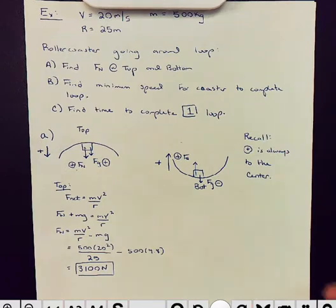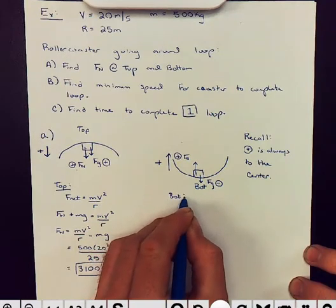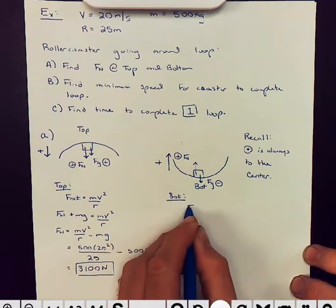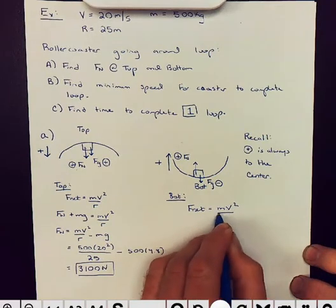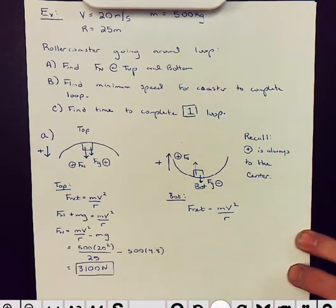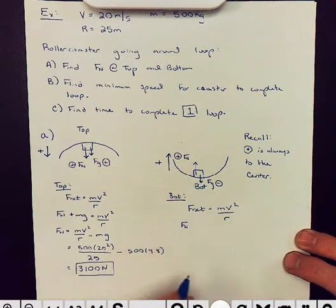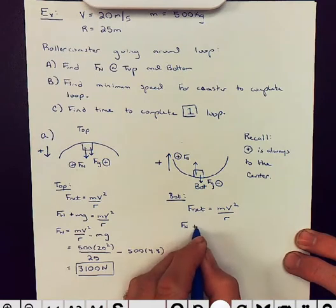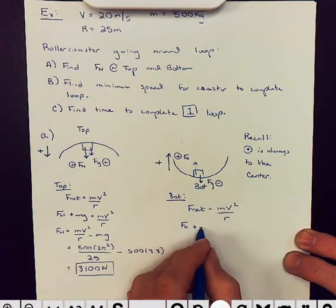All right, for the bottom, same process. Write out F net equals mv squared over r. So, we have F net, or excuse me, normal force, which is positive, plus mg is negative here. So, rather than plus here, this should be minus.